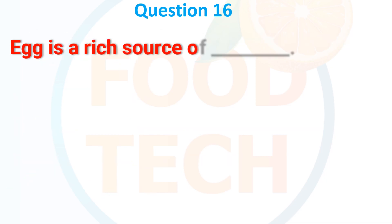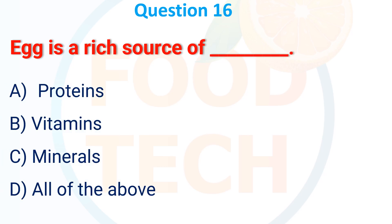Question 16. Egg is a rich source of: A. Protein. B. Vitamins. C. Minerals. D. All of the above. The correct answer is D: all of the above.